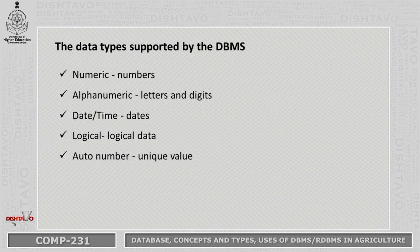The data types supported by a database management system are: numeric data like numbers 1, 2, 3, 4; alphanumeric — letters or digits in combination; date or time data; logical data; and auto numbers, which are unique values. All these data types can be supported by the DBMS.